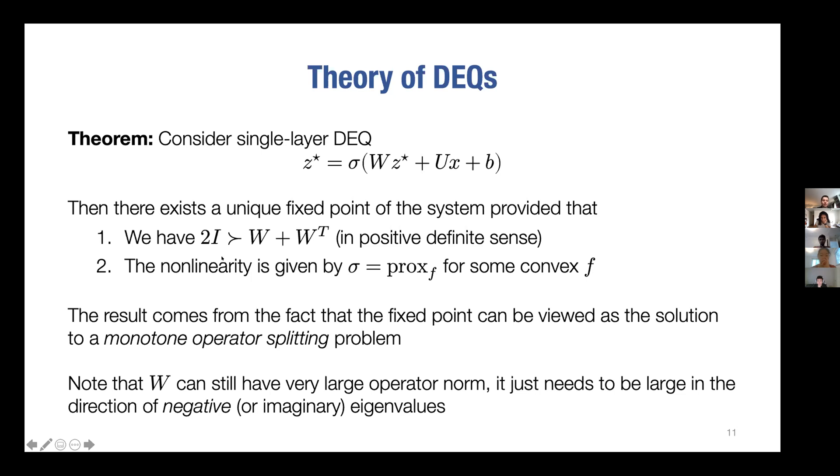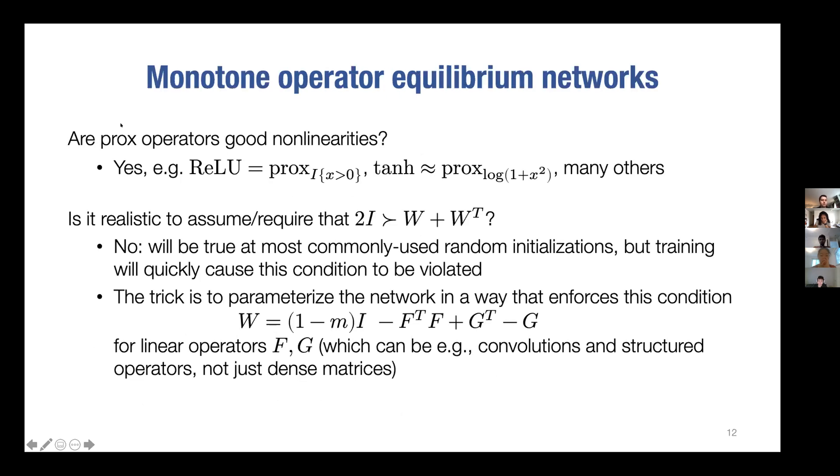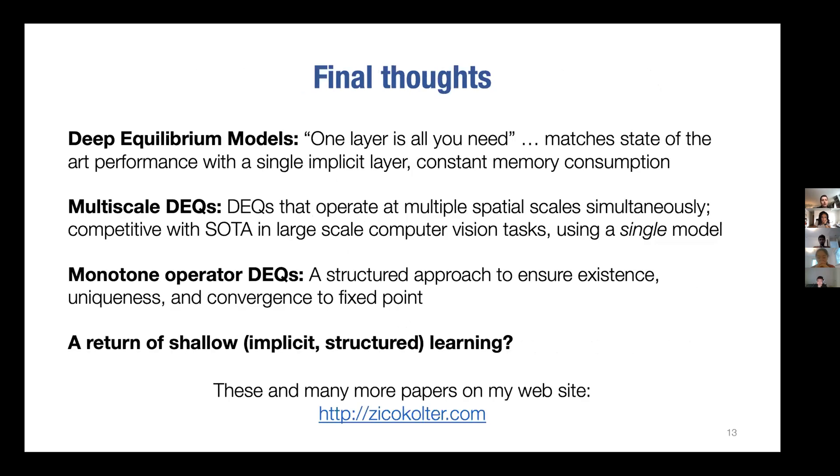Now these conditions are not actually obvious that they're satisfied. The first one, the second one actually is okay because most non-linearities people actually use can be represented as proximal operators, but that's not always the case. The second one's a little bit harder. You have to actually reparametrize your layers a little bit to make this actually work, which forms a new class of DEQs that we call monotone operator DEQs. They don't work quite as well in practice as the other ones I was talking about, but they do have these theoretical guarantees which is very nice.